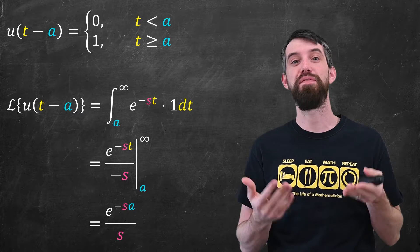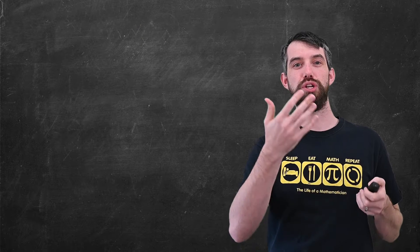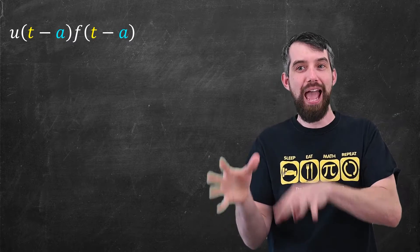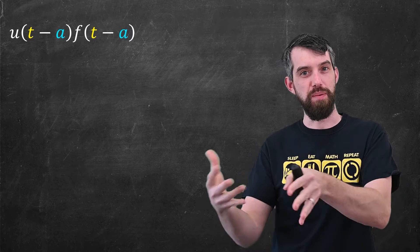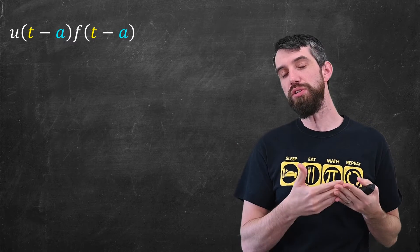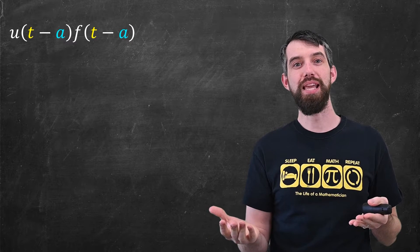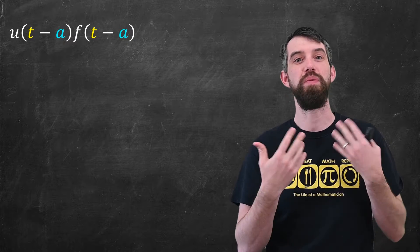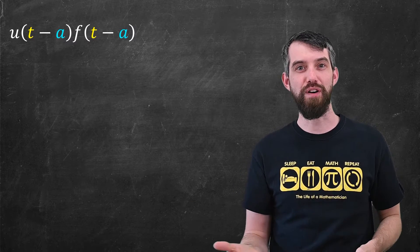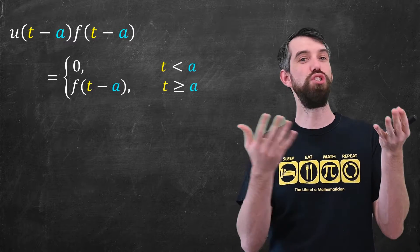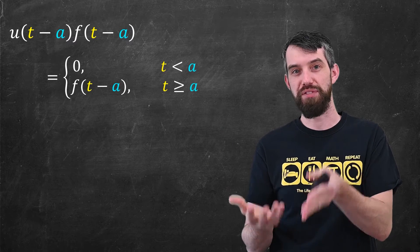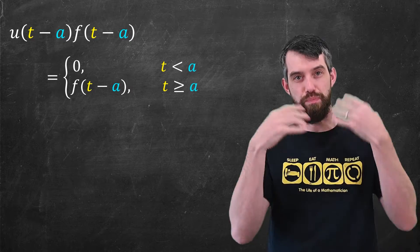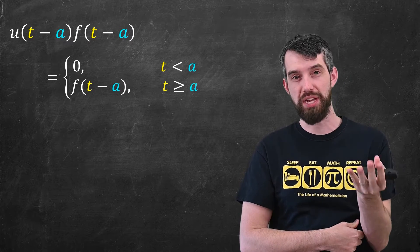Effectively, what happened is that an integral from zero to infinity got truncated to an integral from a to infinity by the step function, and then you can compute that improper integral. You get e to the minus s·a divided by s. Now I'm going to turn to a slightly more general case, which is a step function times some other function f, also evaluated at t minus a. The idea is that I want to think of this as just being the function f, but it gets turned on at the point t equal to a — to the left of t equal to a, it's just going to be zero.